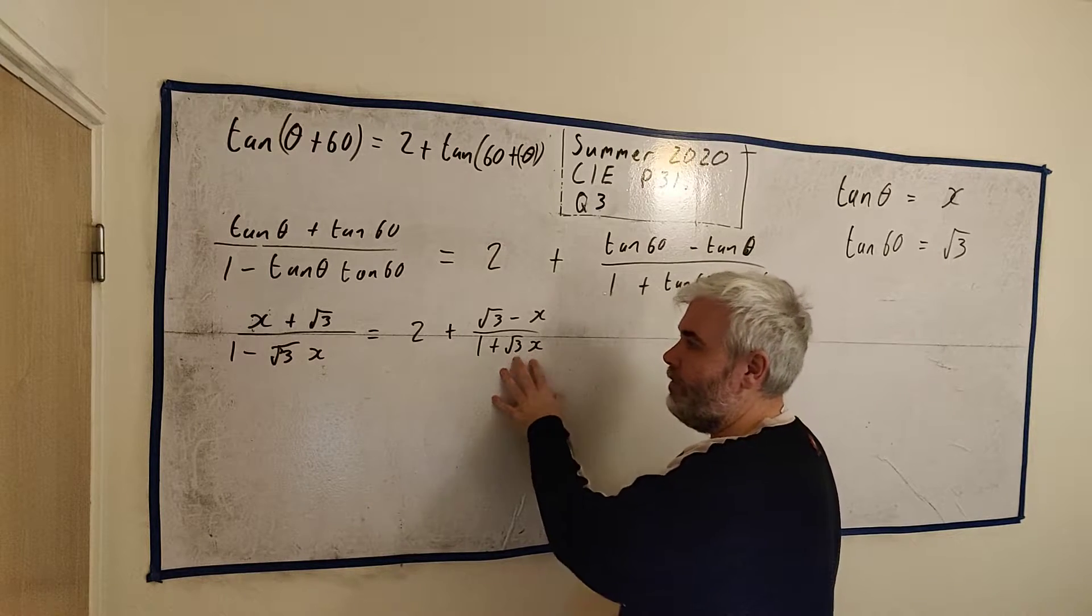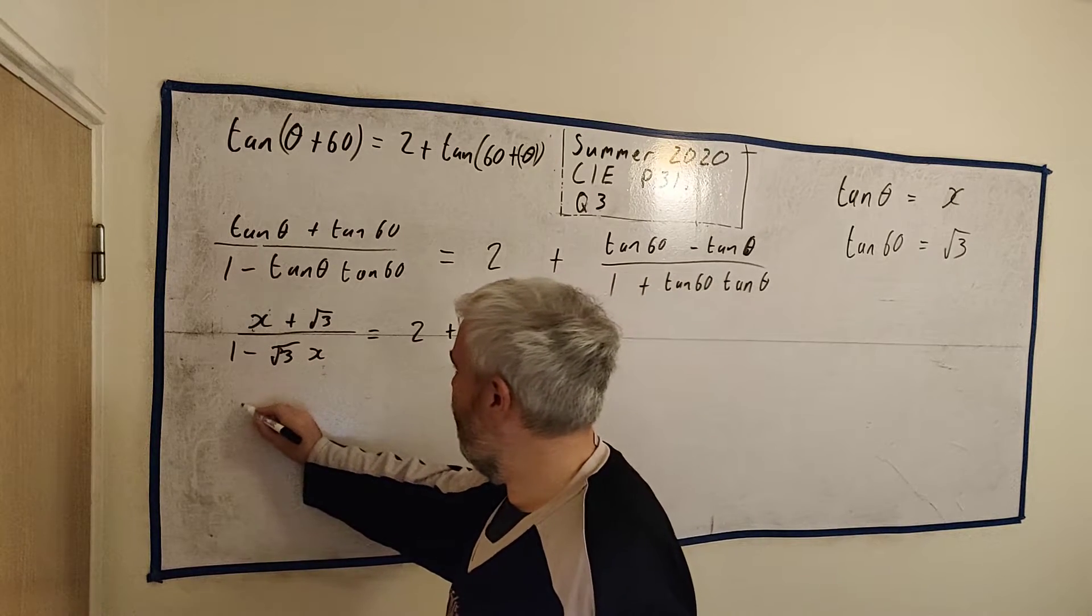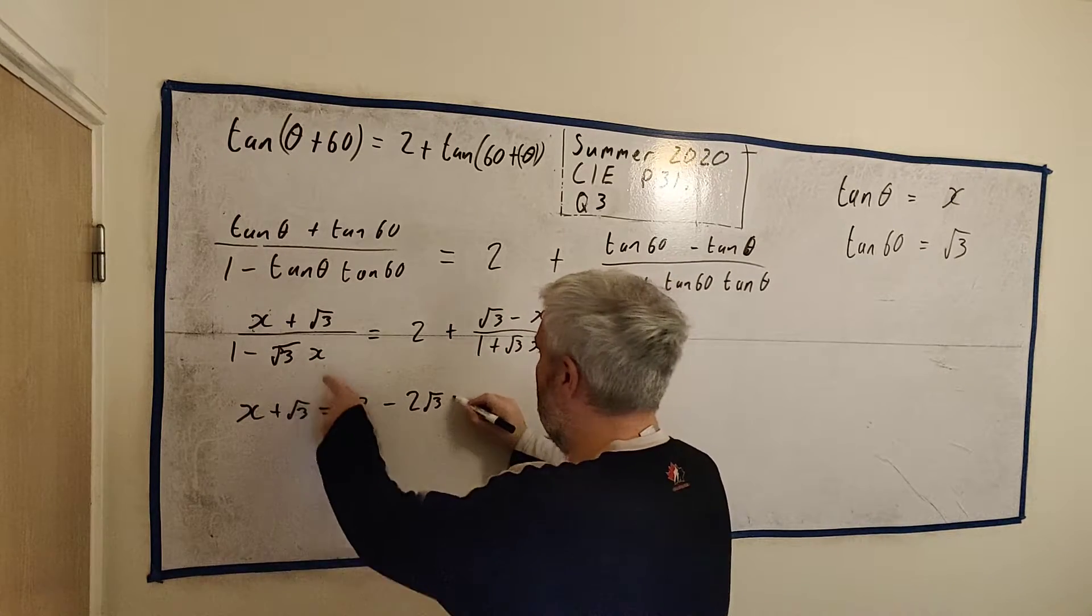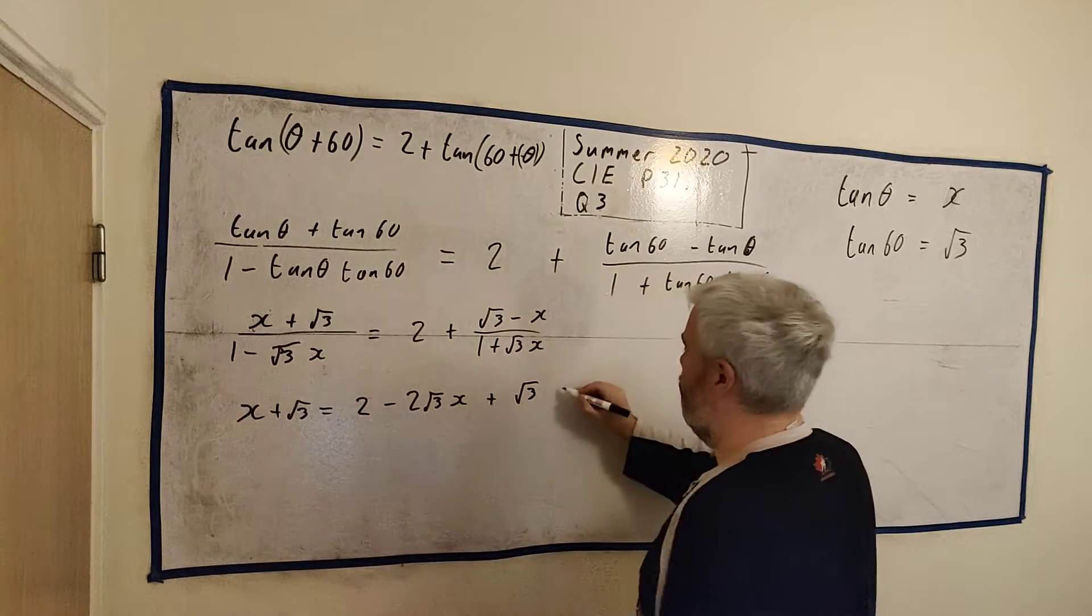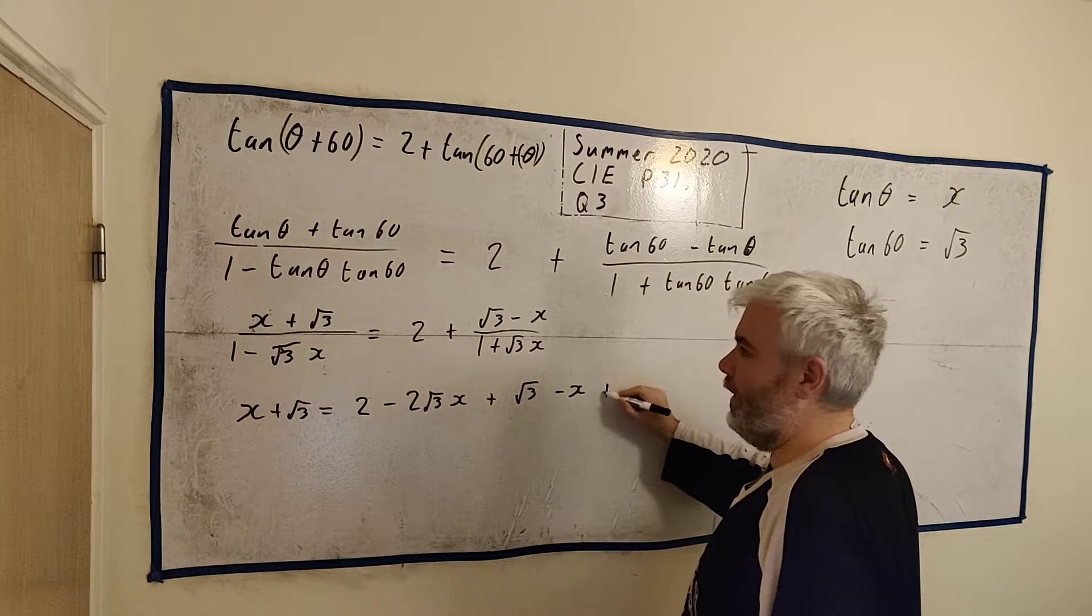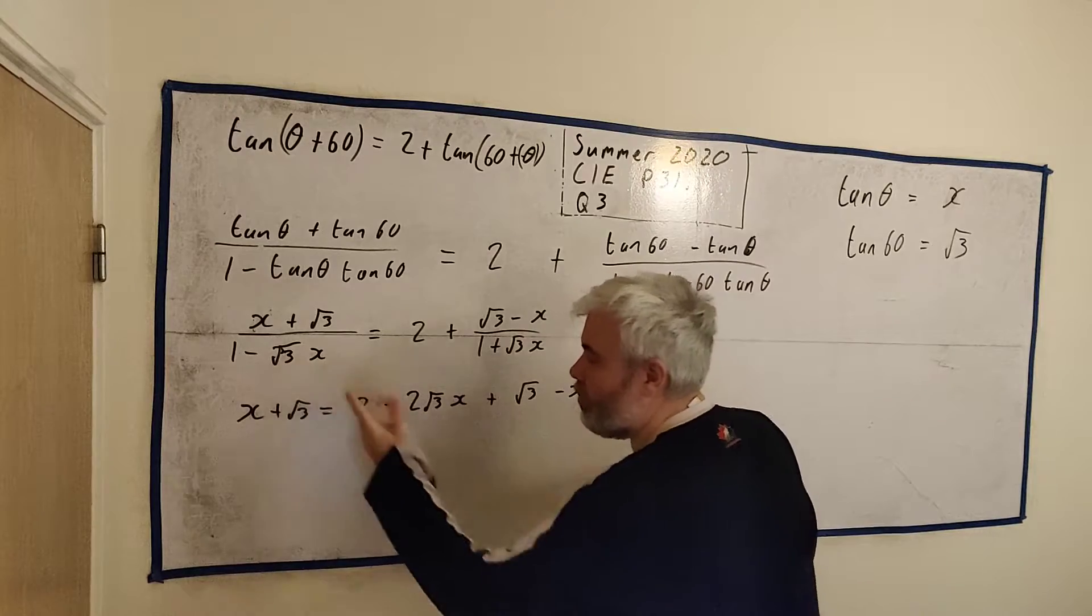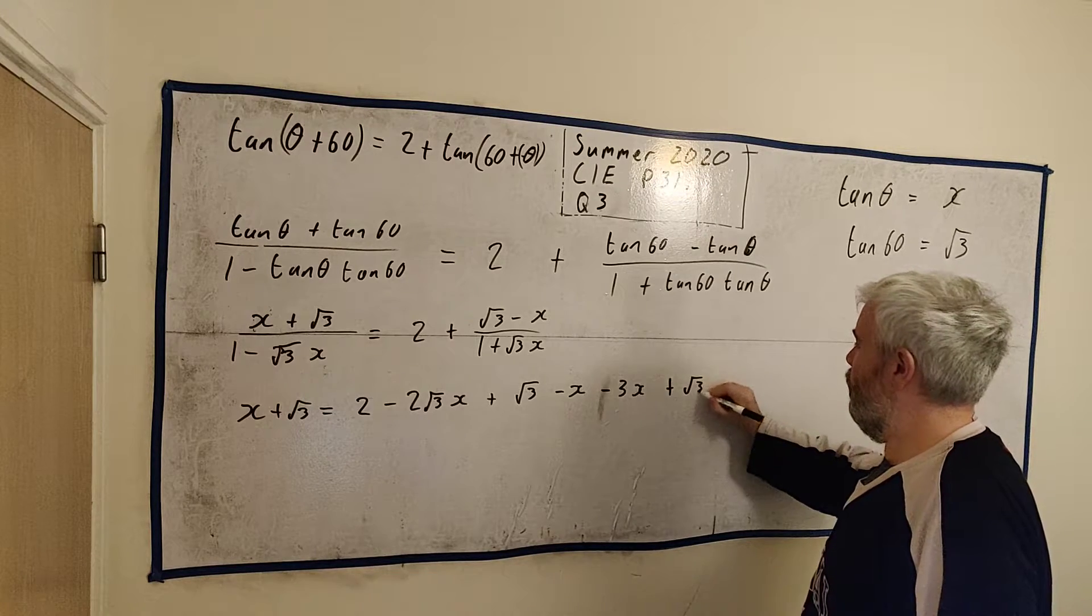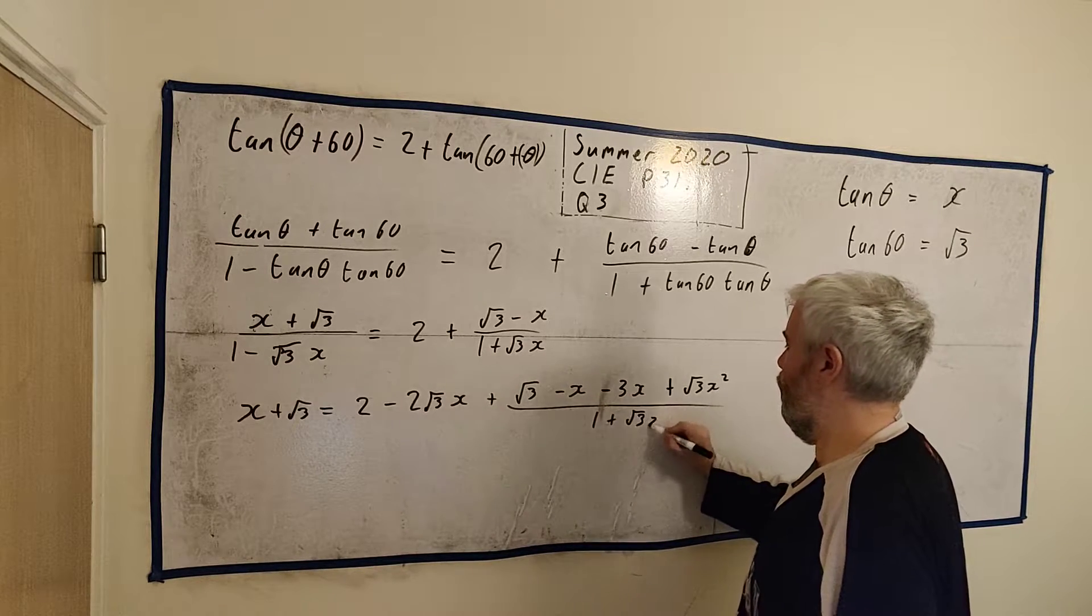So let's try and multiply everything by this. We'll do it separately just to make sure we don't make mistakes. Multiply everyone by this bottom row here. We'll get X + √3 = 2(1 - √3X) + (√3 - X - √3X·√3). We'll get a minus 3X, √3 by √3 is plus 3. Minus √3X by minus X is plus √3X². These last four terms are still over 1 + √3X.